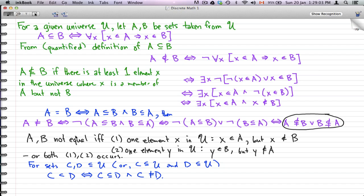So A and B are not equal if and only if one element X in U where X belongs to A but X does not belong to B. So the second condition is one element Y in U, Y belongs to B but Y does not belong to A. So A and B are not equal if and only if one of these two conditions occur, or both conditions occur.